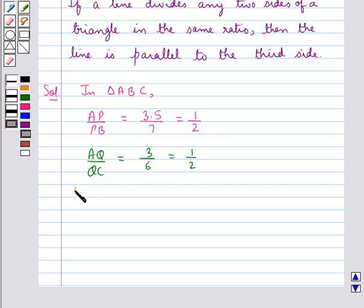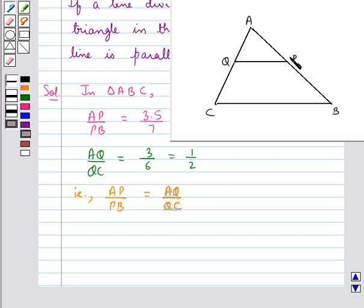That is, we have AP upon PB is equal to AQ upon QC. So we say that the line PQ divides the two sides AB and AC of triangle ABC in the same ratio.